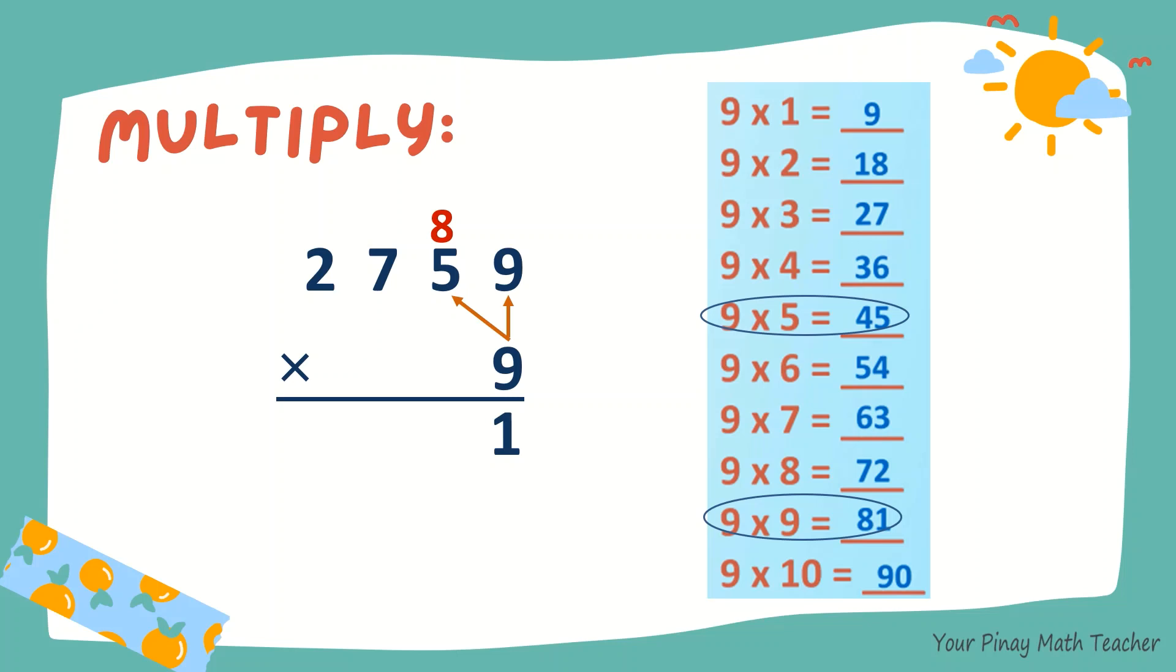9 times 5, 45. Plus 8, 53. 9 times 7, 63. Plus 8, 68. 9 times 2 is 18. Plus 6, 24. So the product is 24,831.